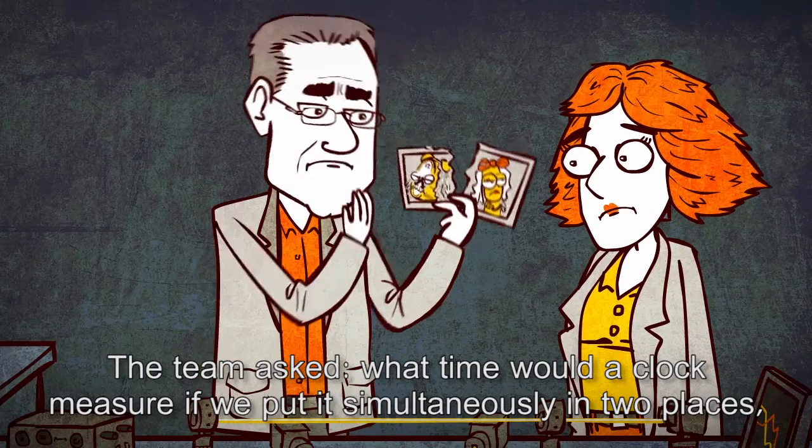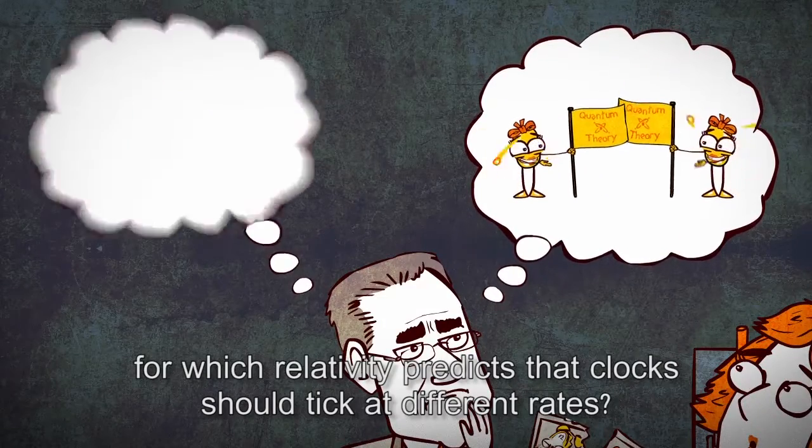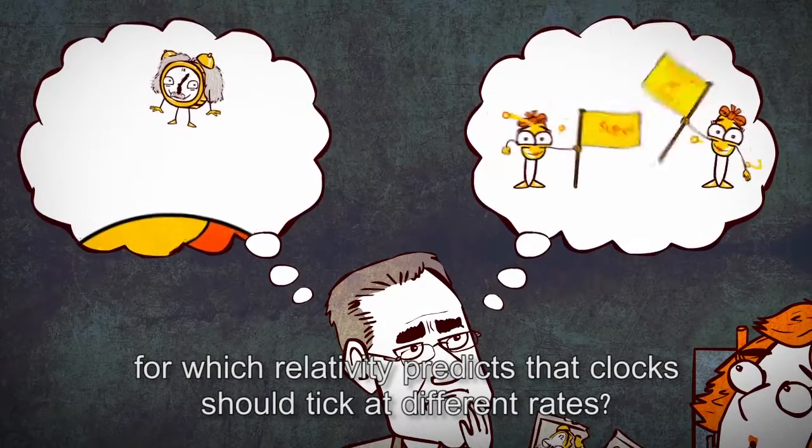The team asked, what time would a clock measure if we put it simultaneously in two places, for which relativity predicts that clocks should tick at different rates?